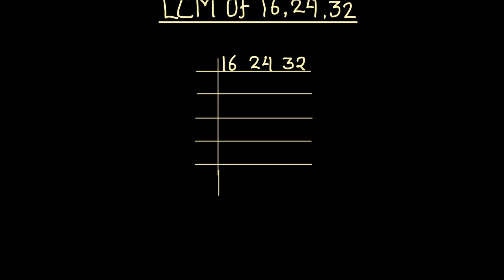To find the LCM of 16, 24, and 32, we are going to first divide these numbers using prime numbers. The first few prime numbers are 2, 3, 5, 7, and so on. As all three numbers here are even, we can use the first prime number, 2, to divide all three numbers.